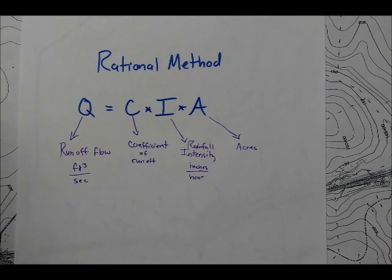Today we're going to be talking about the rational method, which is the method that is used to calculate the amount of rainfall that runs off from any particular area.